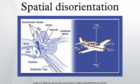Spatial orientation is the ability to maintain body orientation and posture in relation to the surrounding environment at rest and during motion. Humans have evolved to maintain spatial orientation on the ground. The three-dimensional environment of flight is unfamiliar to the human body, creating sensory conflicts and illusions that make spatial orientation difficult and sometimes impossible to achieve.